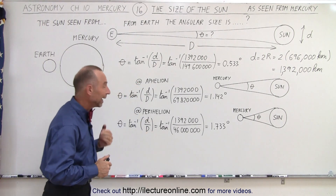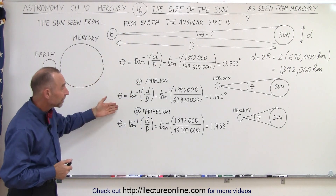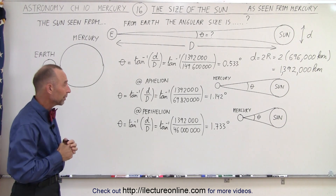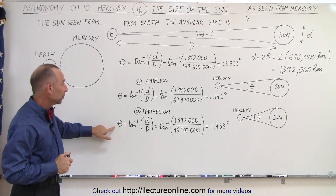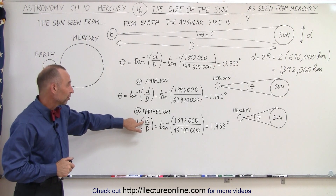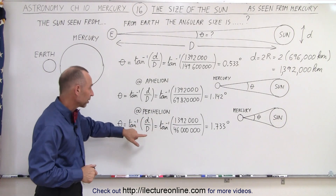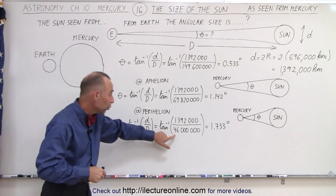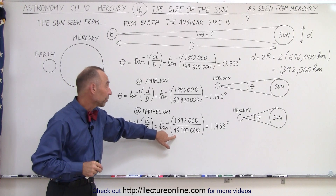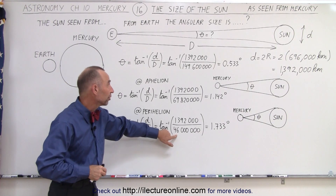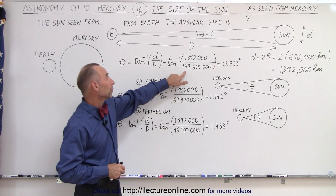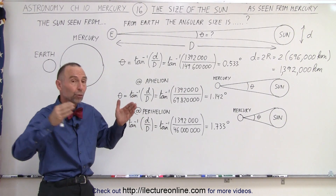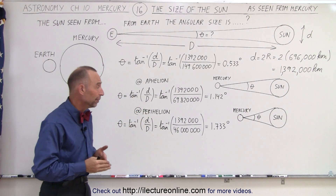And then if we happen to be at perihelion — the closest position to the Sun in Mercury's orbit — we take the inverse tangent of the diameter of the Sun, which is still 1.4 million kilometers, divided by the distance, which is only 46 million kilometers — less than one-third the distance between the Earth and the Sun. Now the disk of the Sun will appear more than three times as large in diameter.